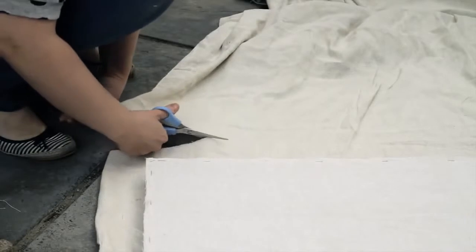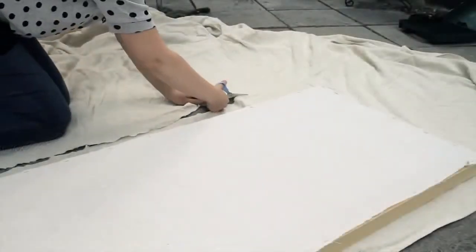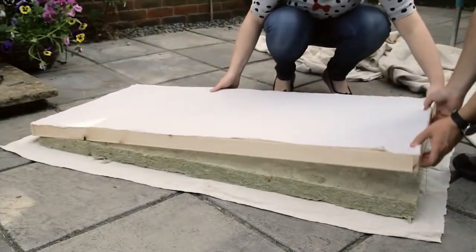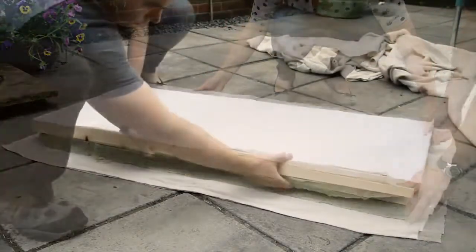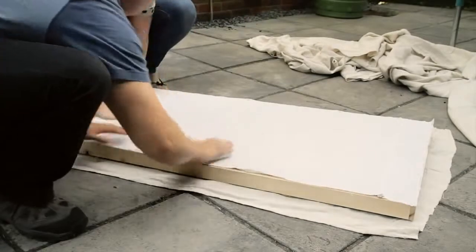Place the frame face down on the fabric and cut a piece big enough to staple round the edges at the back. Place the rock wall on the fabric, lower the frame into place and tuck in the insulation panel.